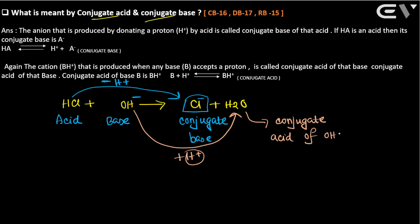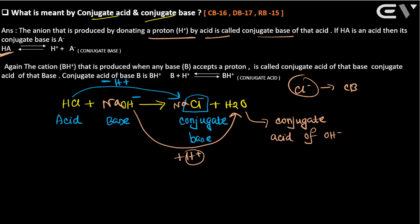The anion produced by an acid donating a proton is called the conjugate base. For example, HCl loses H⁺ and forms Cl⁻ — Cl⁻ is the conjugate base. The cation produced when any base accepts a proton is called the conjugate acid. This chapter's comprehensive questions are now covered. That's a quick review of Chapter 1.